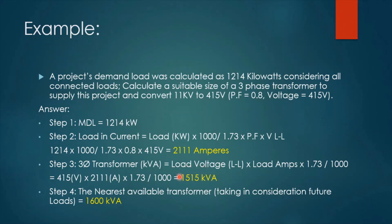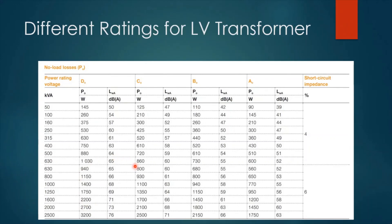Based on this value of 1,515 kVA, we look into the nearest available transformer in a manufacturer's catalog. Taking future loads into consideration, the nearest available transformer is 1,600 kilovolt amperes. From the table included here, the suitable size for our example is 1,600 kilovolt amperes — the nearest to 1,515 kVA. 1,250 kVA would not be suitable, and 2,000 kVA would be more than needed and more costly. So 1,600 kVA is the suitable size for our transformer.